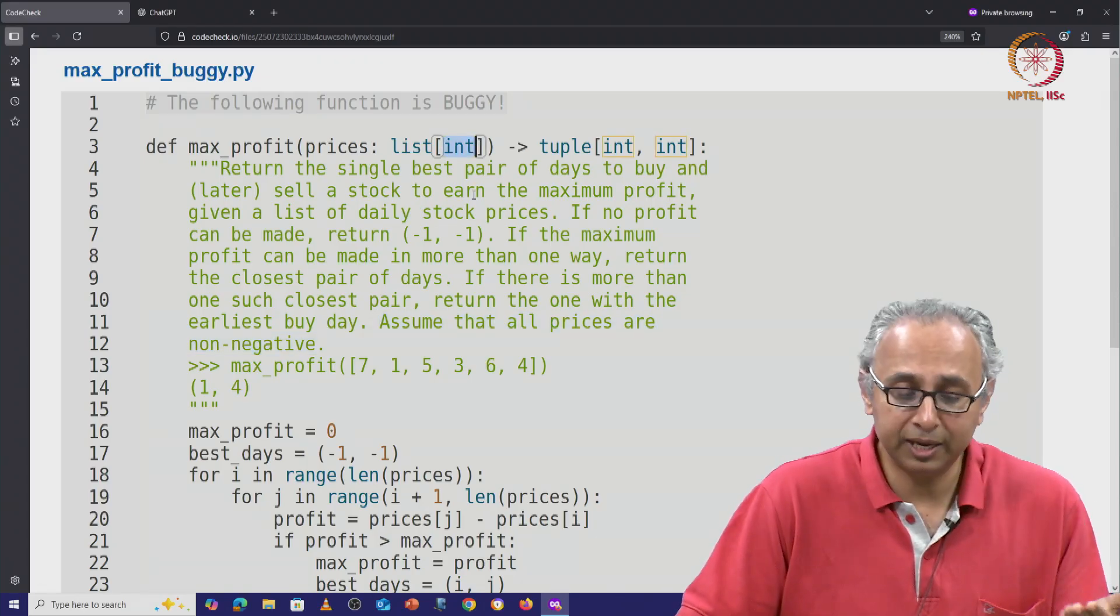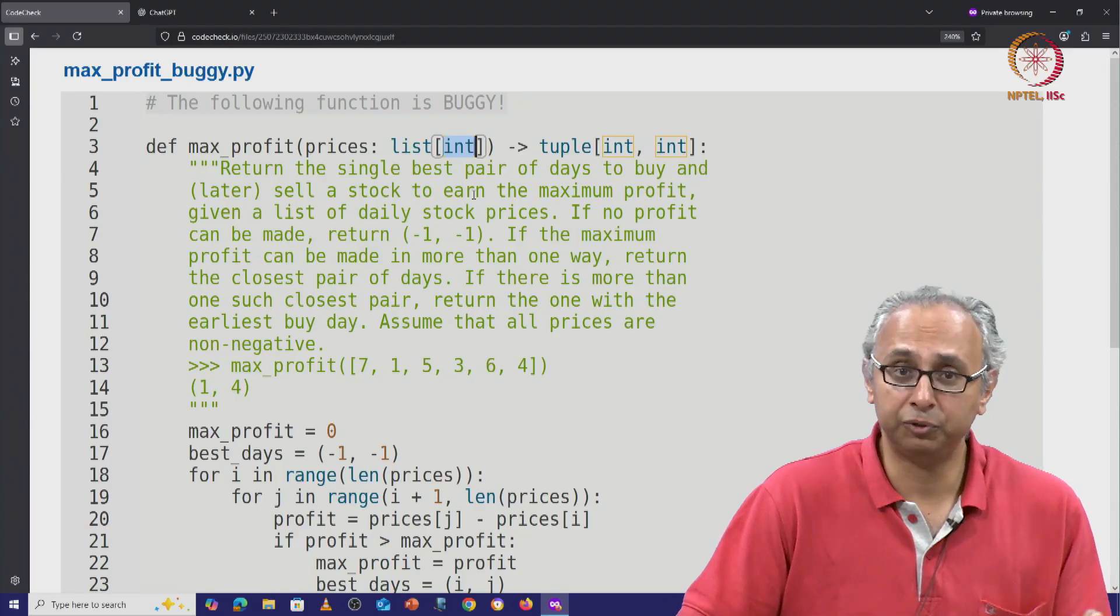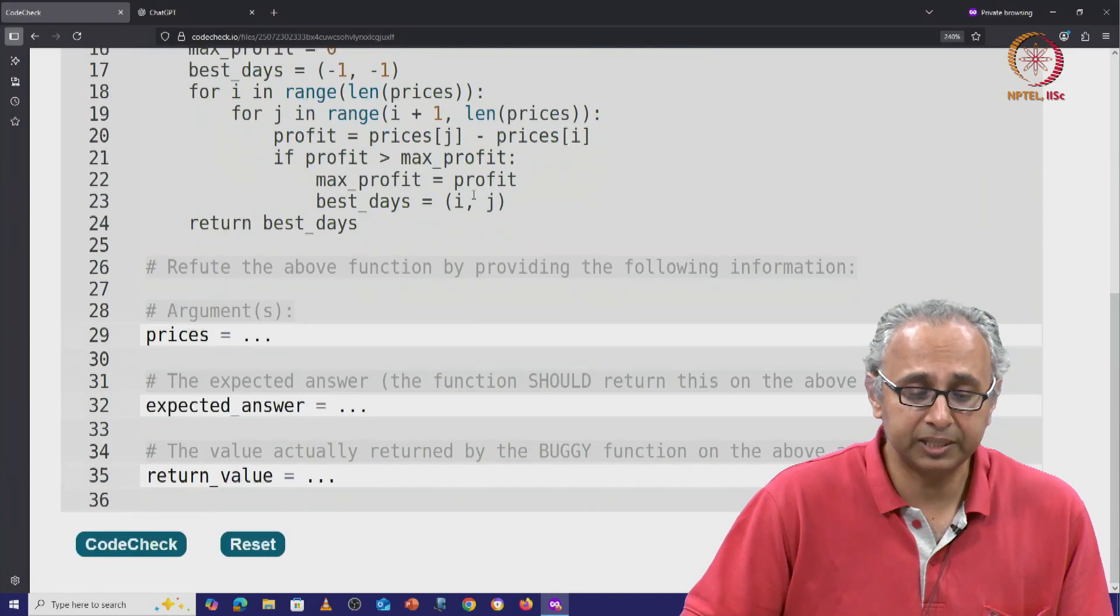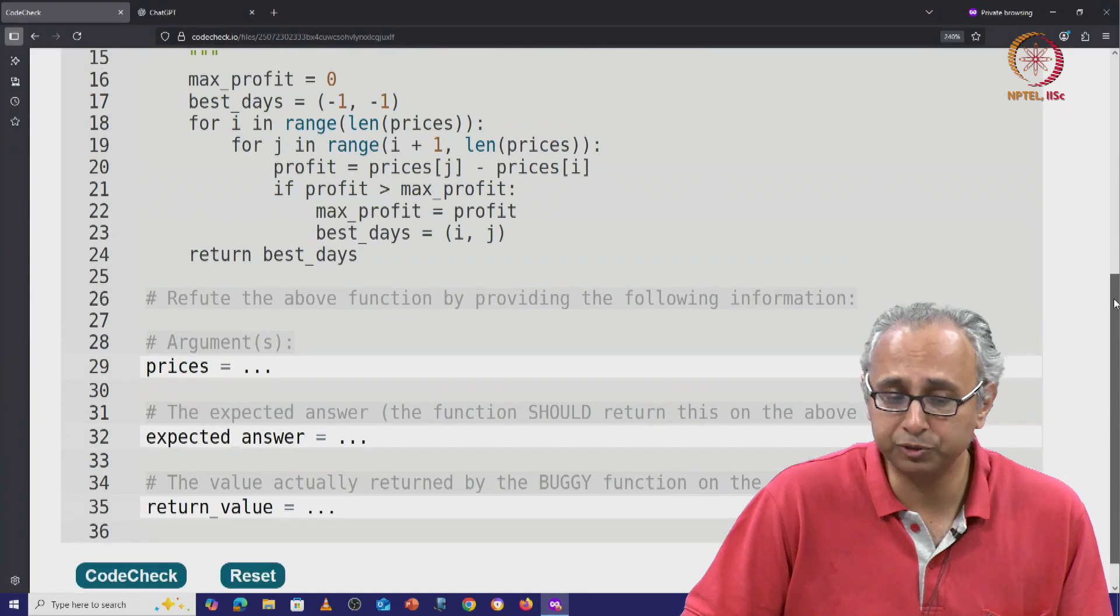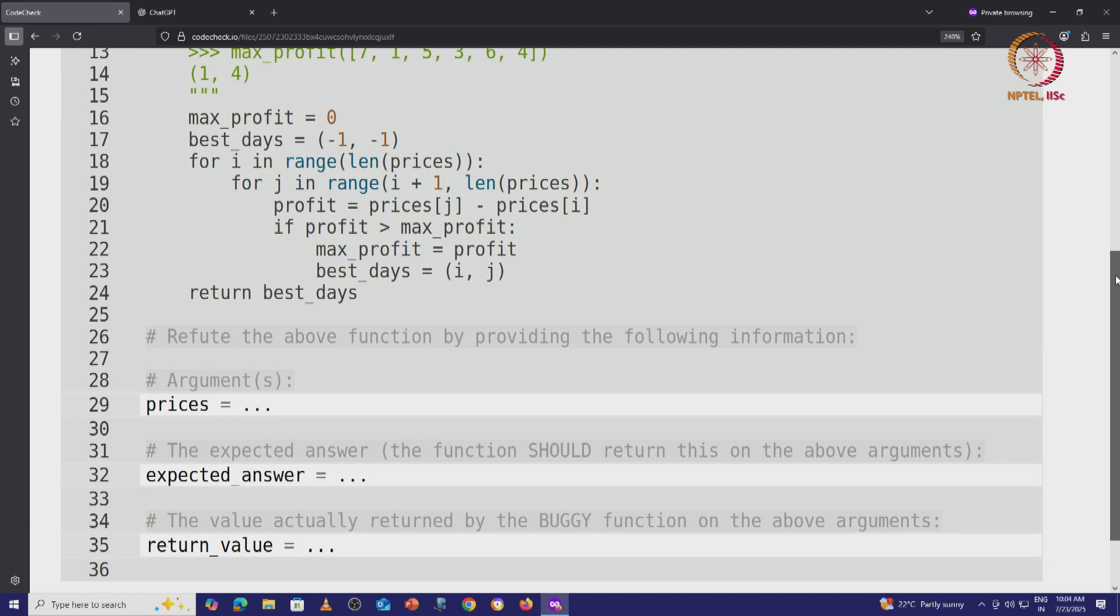So let's try and see if we can refute this code. Let's take a look at this code and see if we can first recognize pattern 3. As we can see, there are 2 nested for loops. And we have seen this pattern before. For i in range, length of prices. So i will loop over all legal indices in this list.